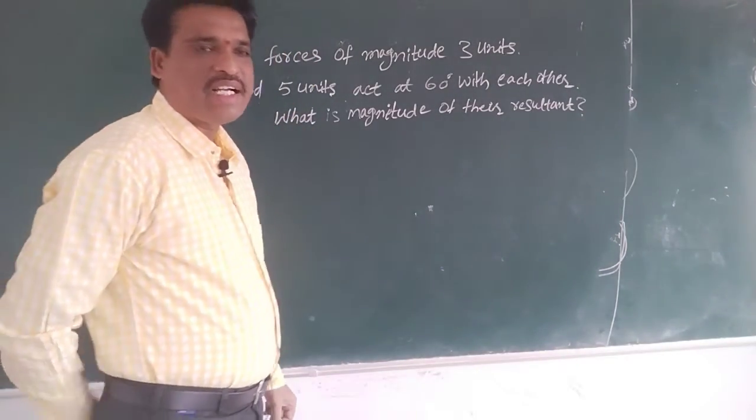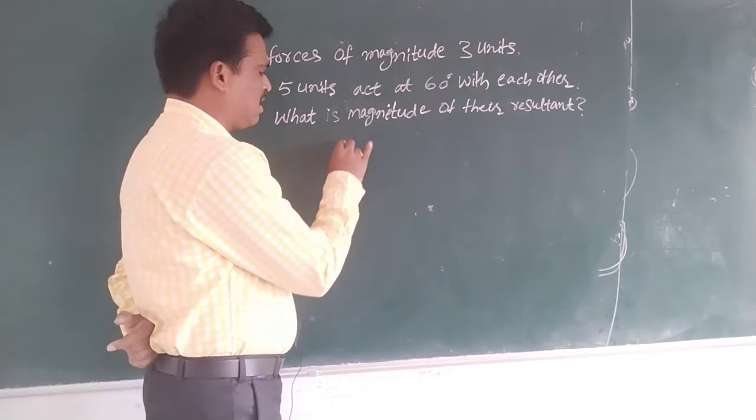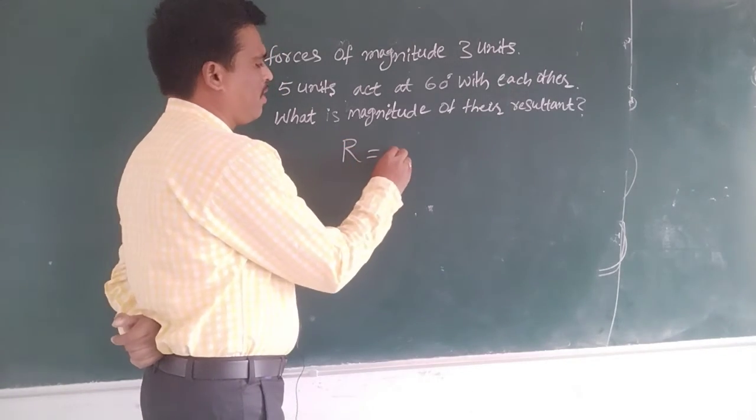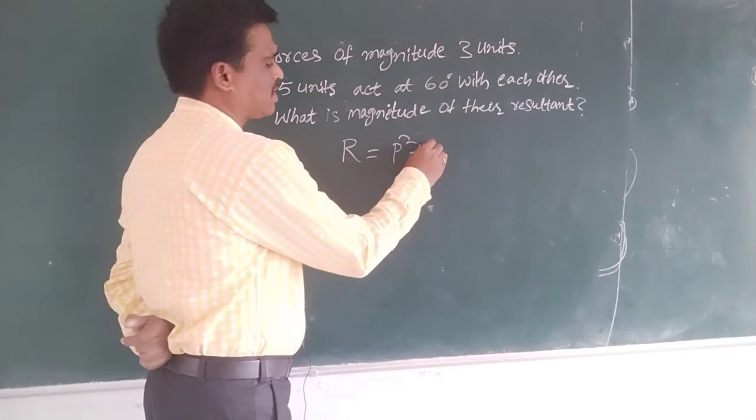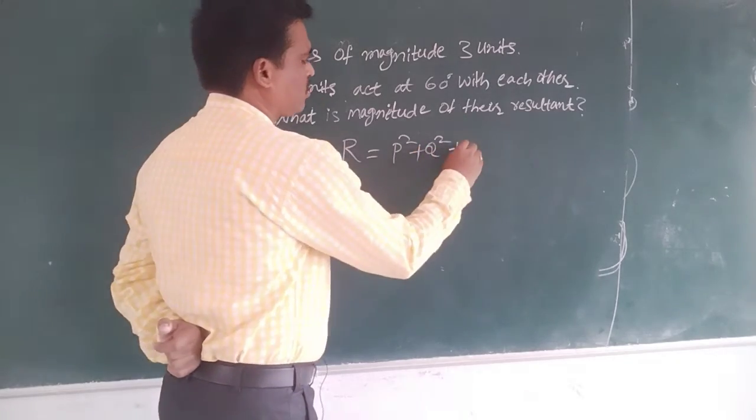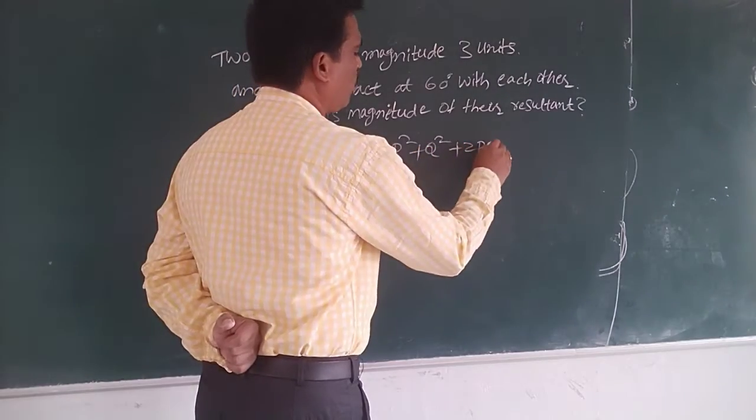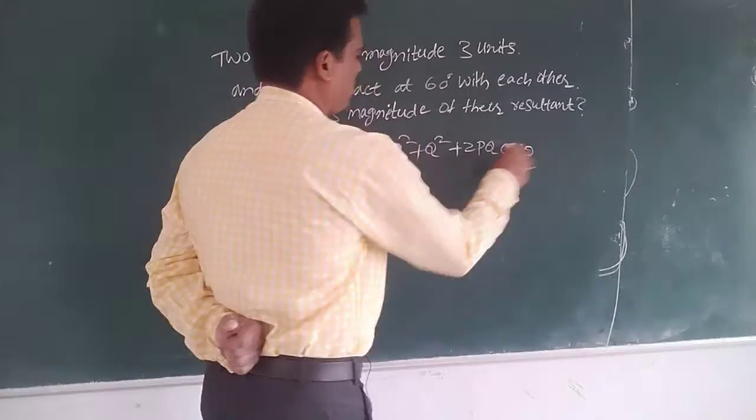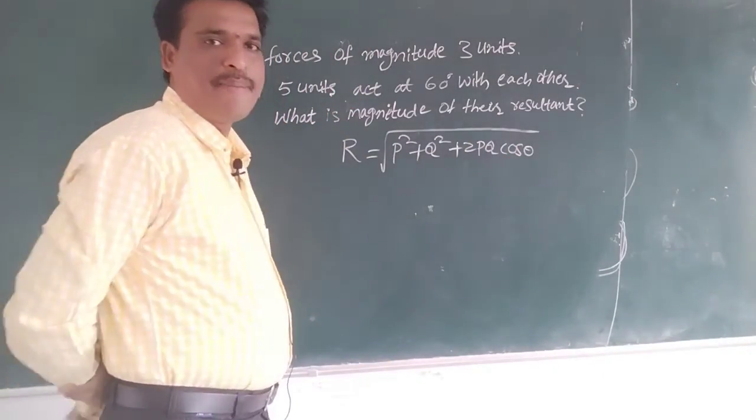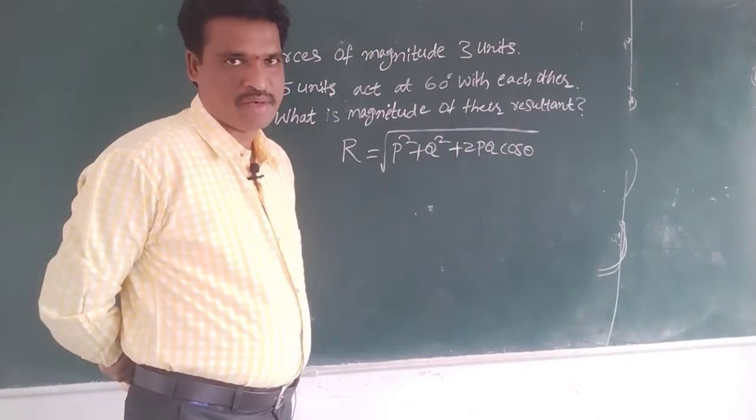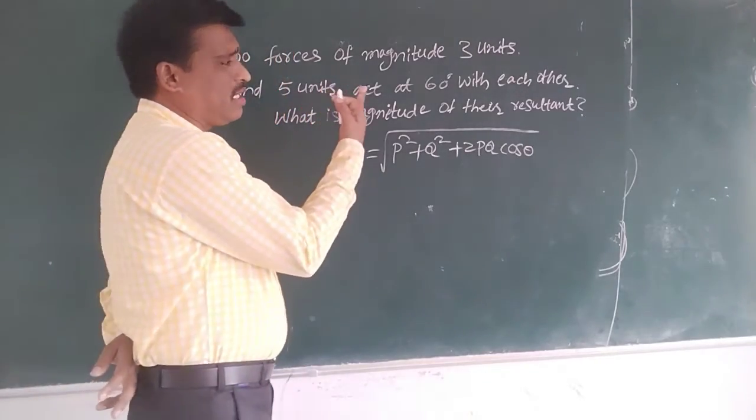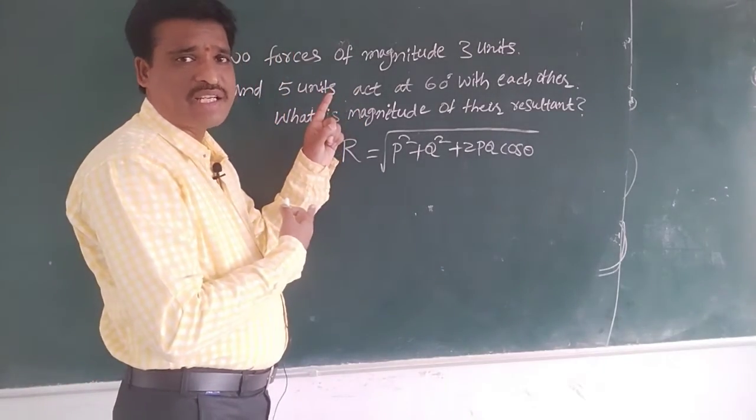What is the magnitude of their resultant vector? You know resultant vector R equals sqrt of P squared plus Q squared plus 2PQ cos theta. This is the formula, the magnitude formula, resultant magnitude formula.